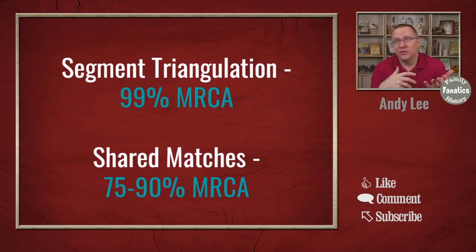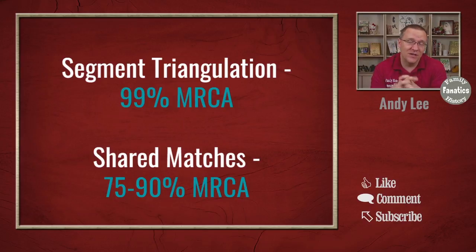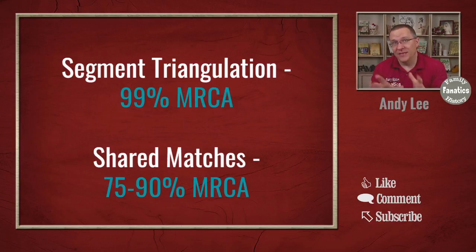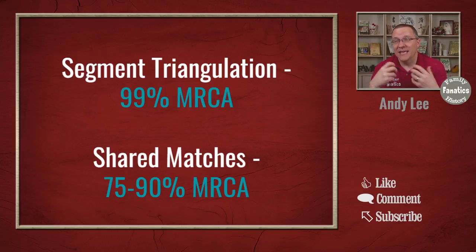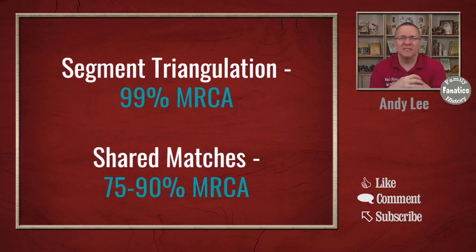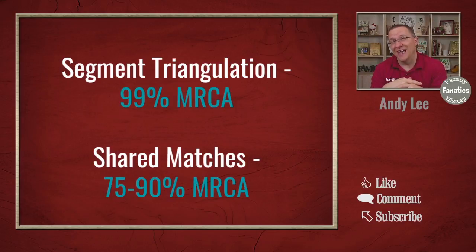But as you've sort of exhausted what you can find with just the shared match list, it's probably time to test with another company in order to get some of that segment data so that you can do some of this triangulation. The nice thing about triangulation is that as we get to smaller segments like 10 or seven centimorgans, if we can find a triangulated group with them, even though seven centimorgans is a really small amount of DNA, because of these other people sharing that same segment, we have confidence that there is a most recent common ancestor we can be working towards identifying.